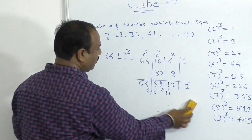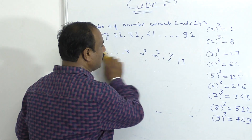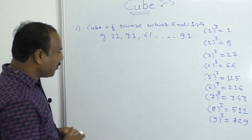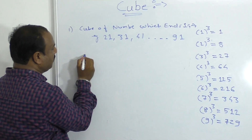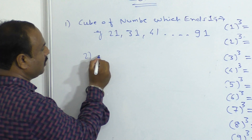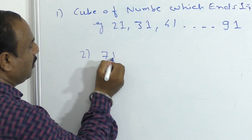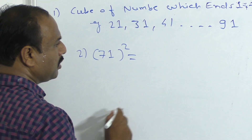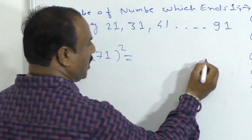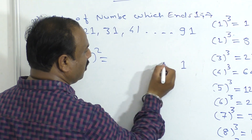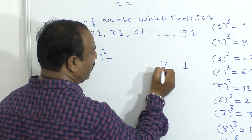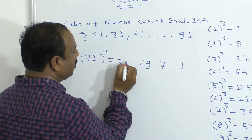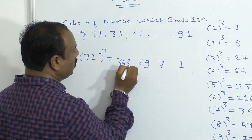Let's take a look at the second example. 71. Let's look at this side: 1, 7. 7 squared is 49. And what is 7 cubed? 343.